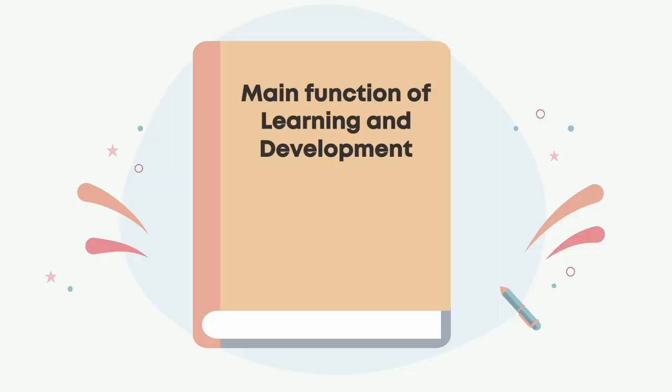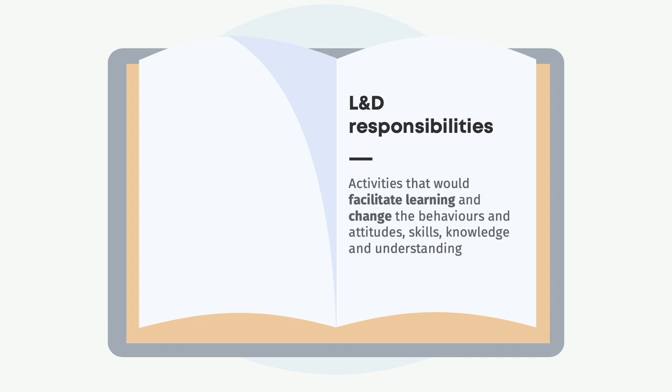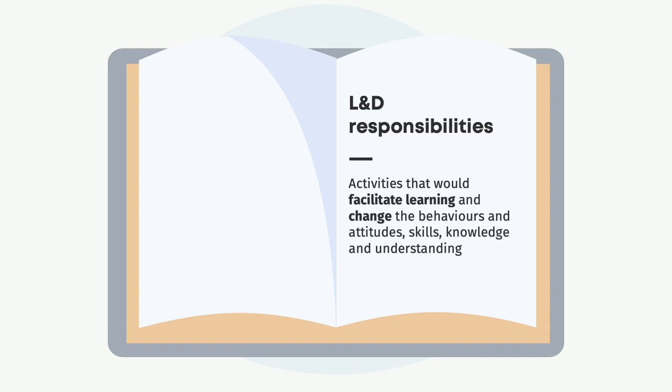So let's break it down. The main function of learning and development is to impact the organizational and individual learning for the purpose of improving effectiveness and performance. L&D is responsible for any activities that facilitate learning and, in particular, change behaviors and attitudes, skills, knowledge, and understanding. This can happen on many different levels, from the entire organization down to a single department, a team, or even an individual.